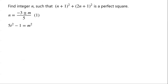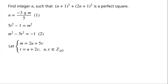So n = (−3 ± m) / 5. Rearranging, we have m² − 5t² = −1. This is a negative Pell's equation. If we carry out a substitution, it can be converted to a standard Pell's equation. We let m = 2u + 5v and t = u + 2v, where u and v are non-negative integers.